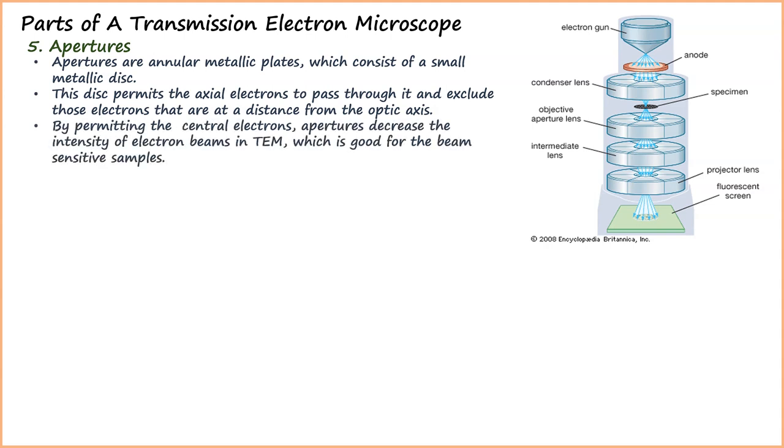By permitting the central electrons, apertures decrease the intensity of electron beams in TEM, which is good for beam-sensitive samples. This way it also removes electrons scattered to high angles.